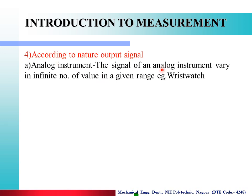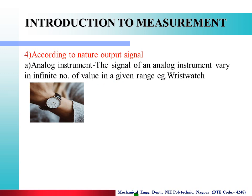Next, according to the nature of output signal: the first type is analog instrument. The signal of an analog instrument varies in an infinite number of values in a given range. Example: a wristwatch — it gives time from one o'clock to twelve o'clock with minute and second readings. There are infinite number of values in the range, and two observers may read slightly different values. That is called an analog instrument.